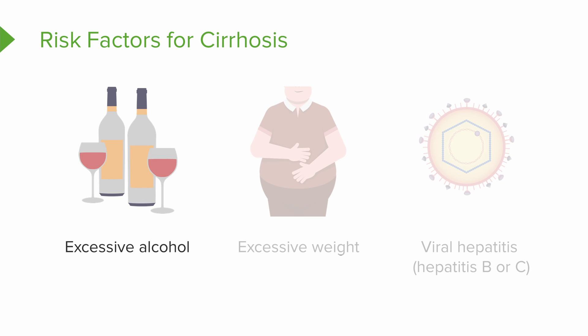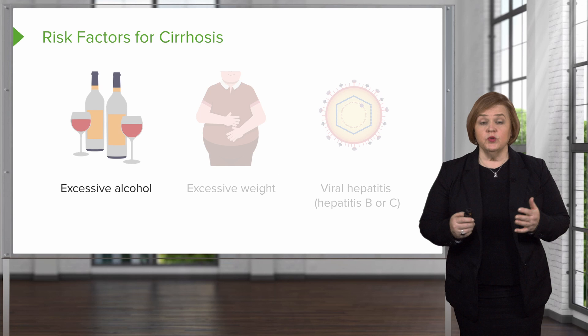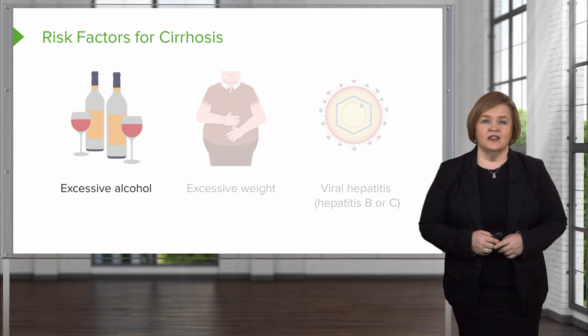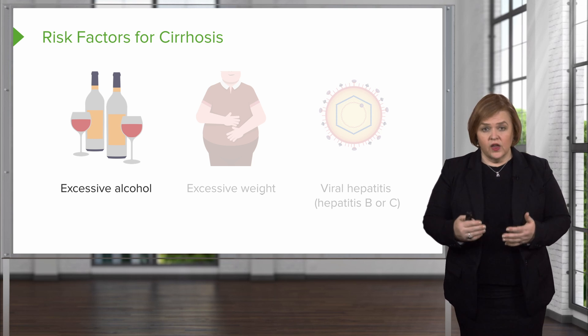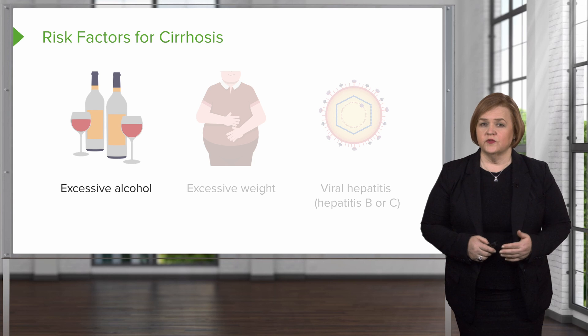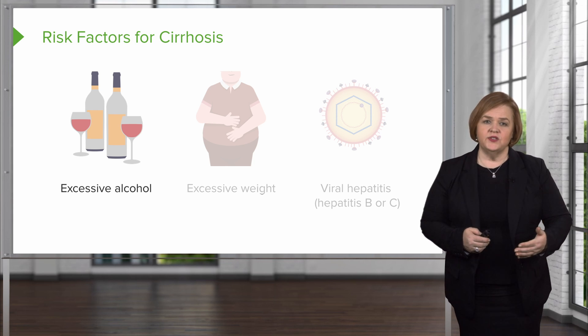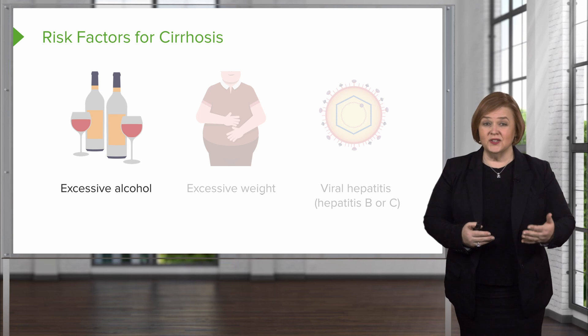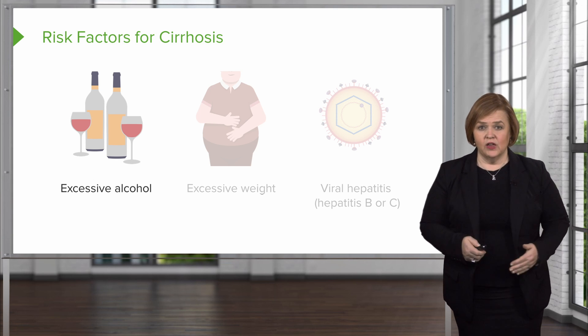There are three main categories of risk factors for cirrhosis to keep in mind, and this relates to the United States. The first one is excessive alcohol. If the patient has an excessive alcohol problem, they're really increasing the risk for cirrhosis — a lifestyle factor where we'd need to intervene to help them understand the importance of liver health and limiting their alcohol.